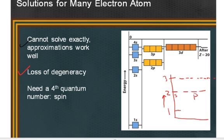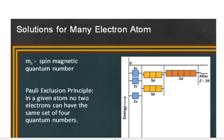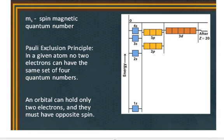So because of this, for the many electron atoms, we actually have to add a fourth quantum number, called the spin quantum number. And the reason why is because it's abbreviated m sub s, is because of the Pauli exclusion principle which states that in a given atom, no two electrons can have the same set of four quantum numbers.